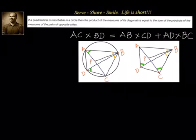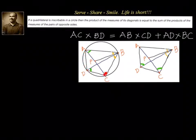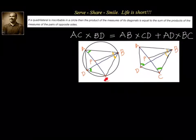Let us understand how we can derive or prove this theorem. The first step is: we have constructed a line segment BP from B onto AC such that angle ABP is equal to angle CBD. We only know ABCD with diagonals AC and BD — BP is our construction.